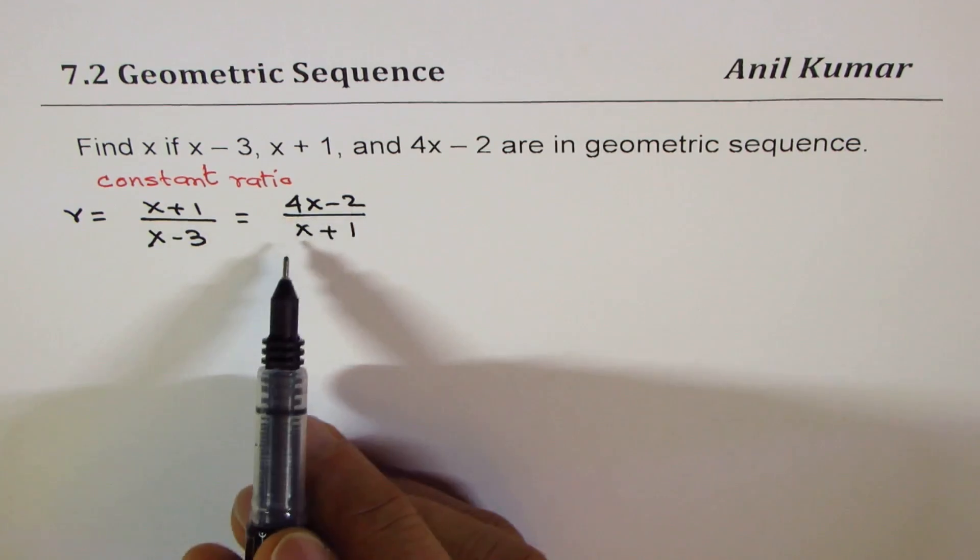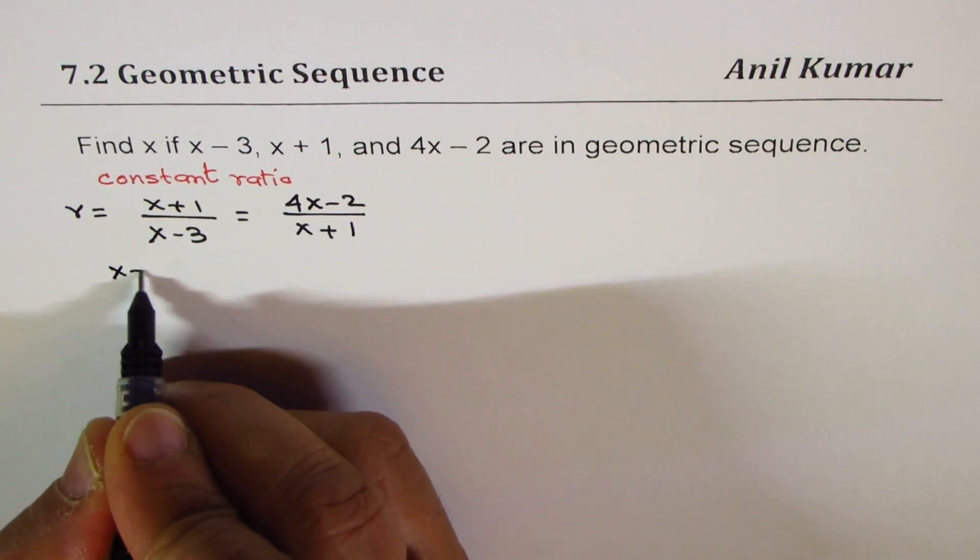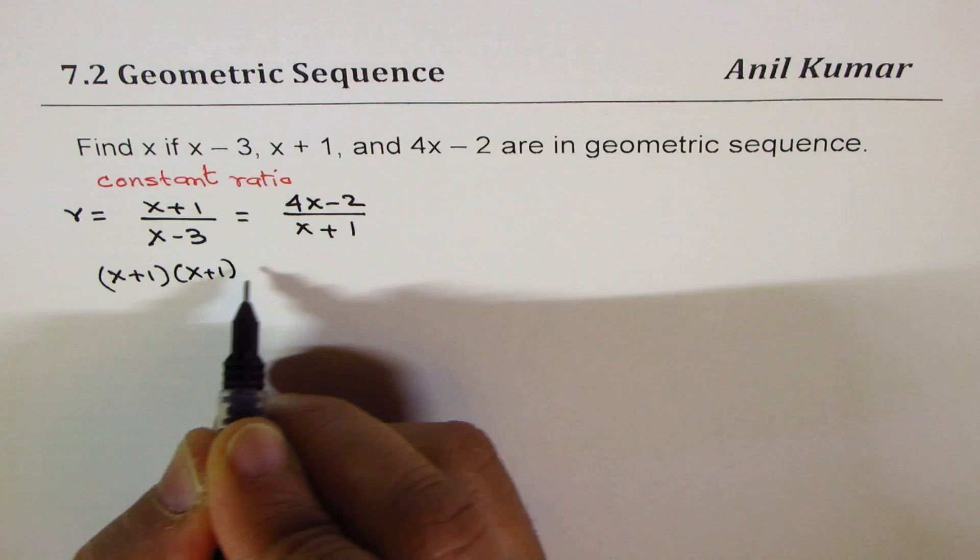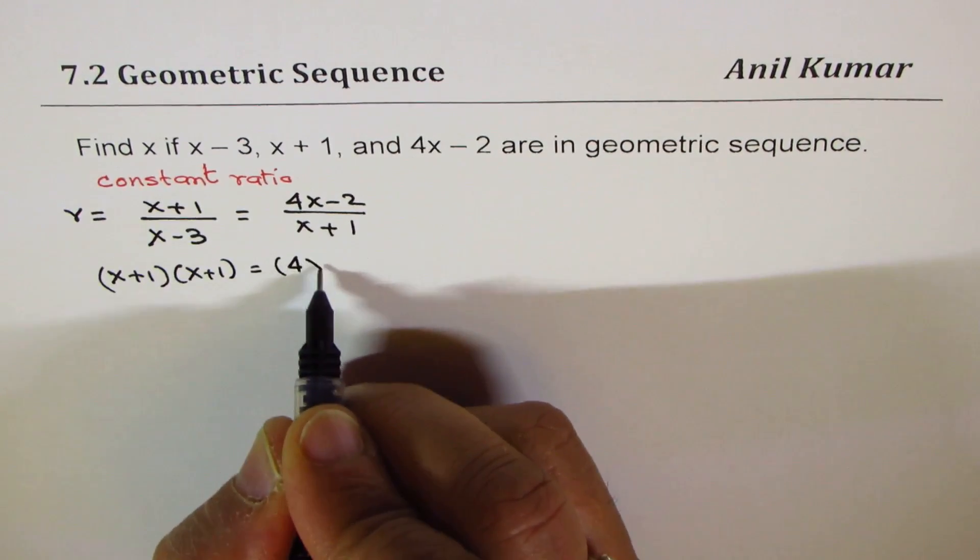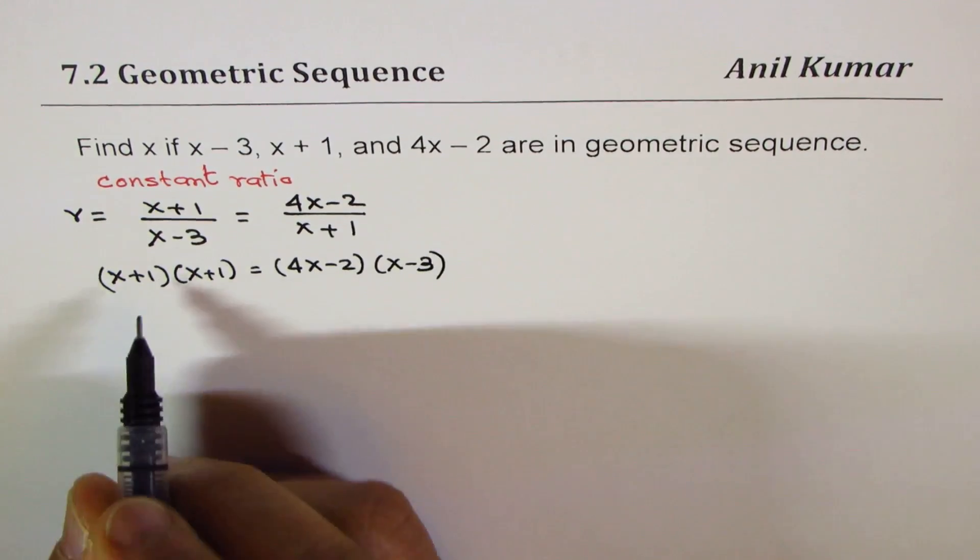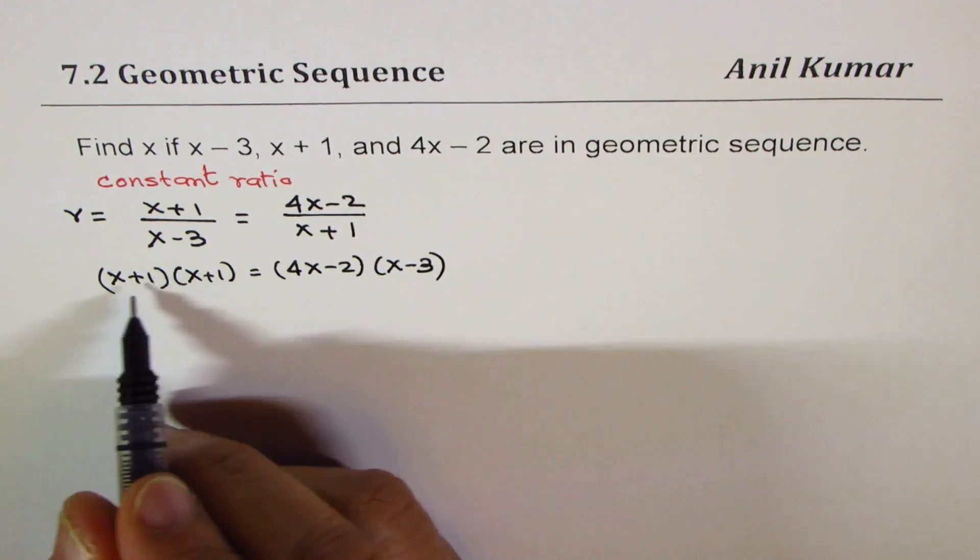We can cross multiply to solve for x. We will get a quadratic equation. So we have (x + 1)(x + 1) = (4x - 2)(x - 3). This is the square of x + 1.